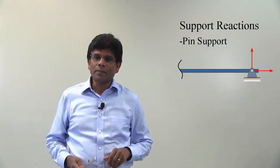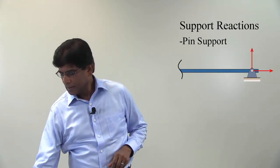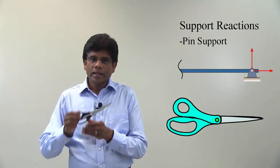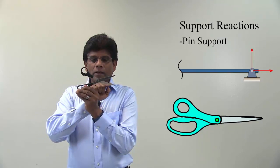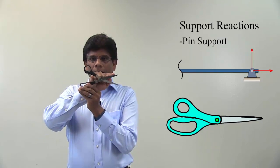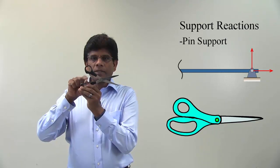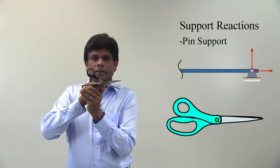Let us take a look at another example of a pin support. Here I have a scissor, and it has got two parts: upper handle with a blade, and a lower handle. These two parts are connected by a pin right here.